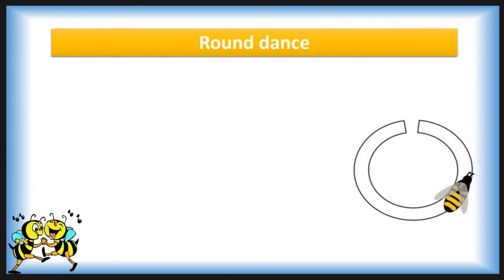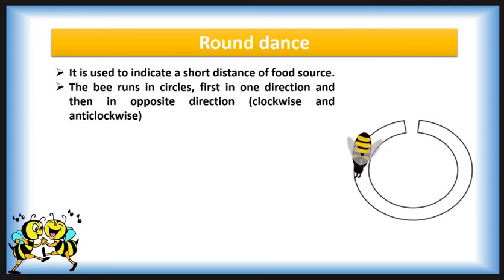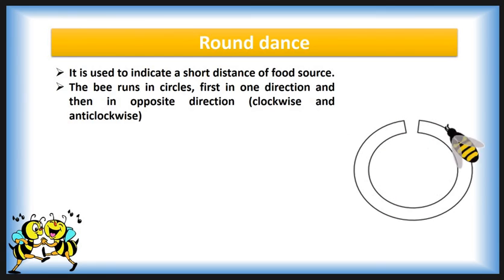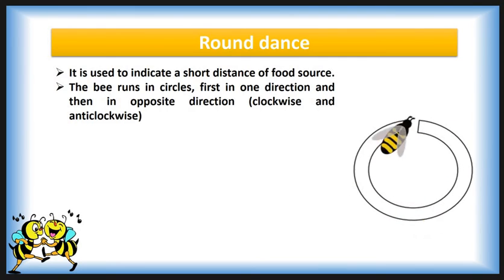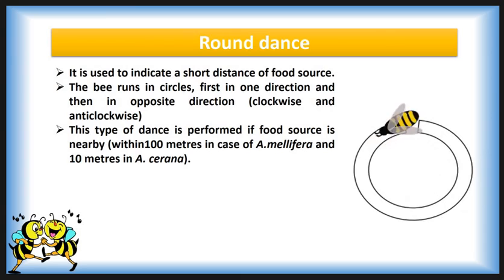The first dance is the round dance. It is used to indicate a short distance to a food source. The bee runs in a circle, first in one direction and then in the opposite direction — clockwise and anticlockwise. This type of dance is performed if the food source is nearby: within 100 metres in the case of Apis mellifera and 10 metres in the case of Apis cerana.